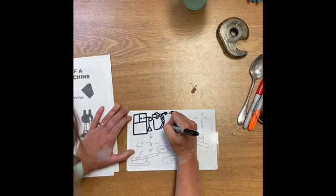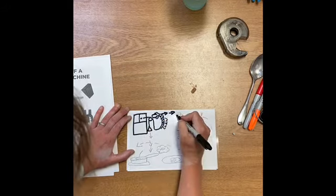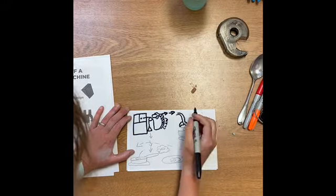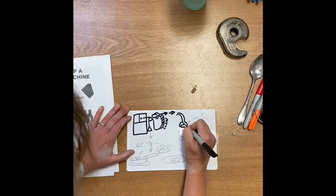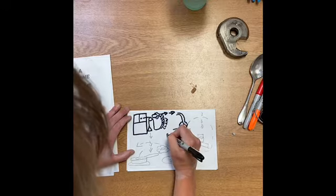So I'm gonna write 'claw' right there so people know that that's like a claw hand. I think I'm gonna label that to show that it's an egg, just in case people can't tell, because sometimes it's hard to tell from a drawing when somebody's not explaining.